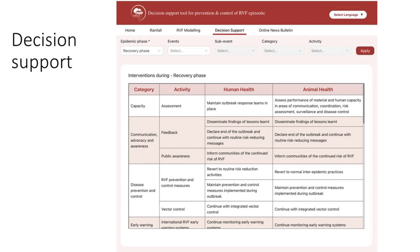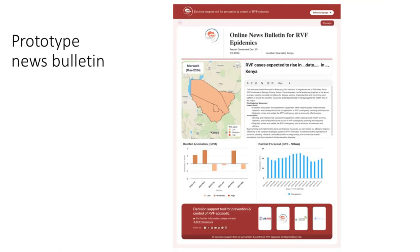The third is a decision support tool — basically a matrix telling you, if you are two months before the outbreak, what you are supposed to be doing as a government agency: surveillance, training, mobilizing resources like vaccines for when the outbreak period occurs. The fourth is a newsletter, meant to produce newsletters to counties.